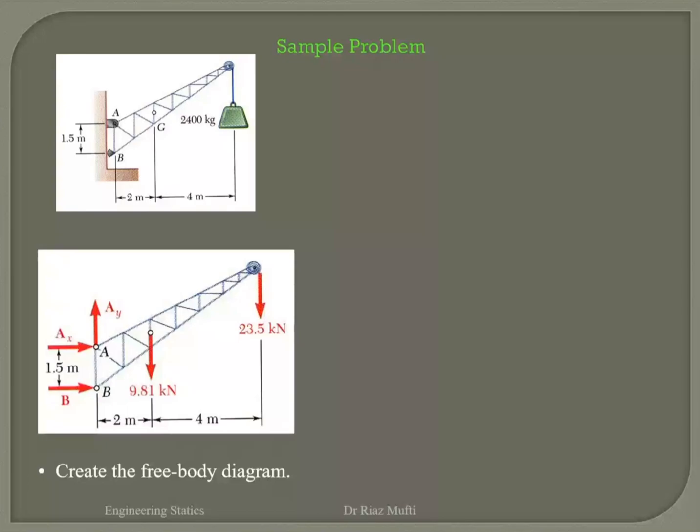Ax comes out to be negative — minus 17.08. Because it's in equilibrium condition, I can see that there are forces up and down, but for the horizontal direction it's only one force in one direction.